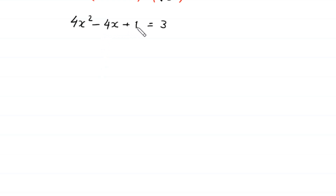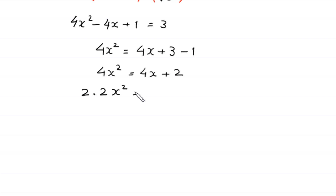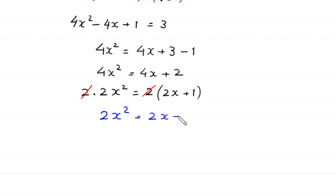Moving negative 4x and plus 1 to the right side leaves 4x squared equals 4x plus 3 minus 1, which is 4x plus 2. We can write 4x squared as 2 times 2x squared, equal to 2 times (2x plus 1). The 2 cancels, giving 2x squared equals 2x plus 1.